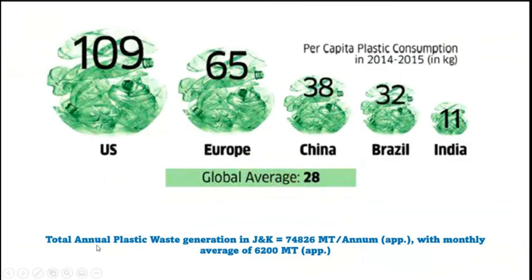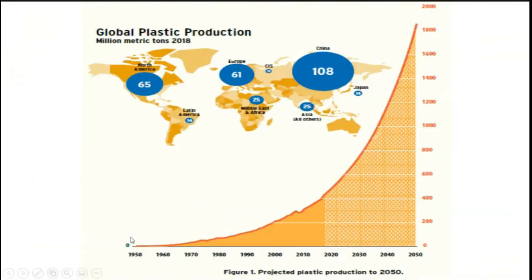In Jammu and Kashmir, waste generation is around 74,826 metric tons per annum, with a monthly average of around 6,200 metric tons — the latest data as of 2021. There is also a graph showing an increasing trend of plastic production, particularly in Asia — China, other countries, and Russia — with America second and then Europe.